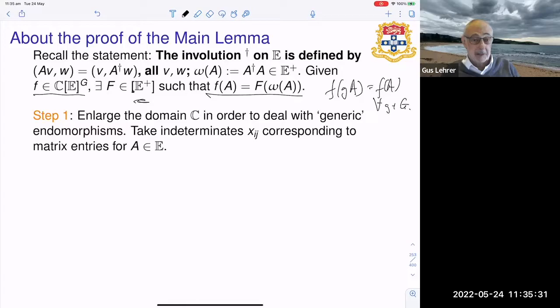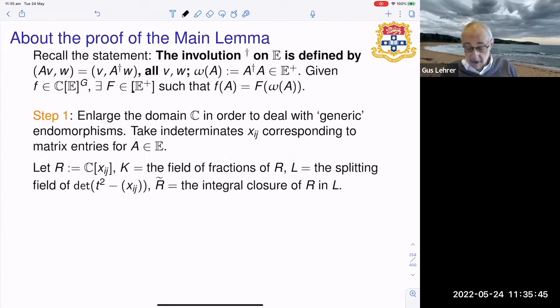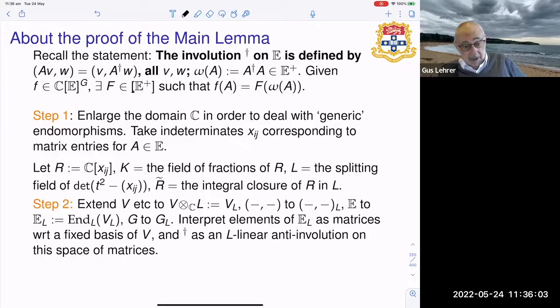So we take indeterminates x_ij corresponding to the matrix entries, and we take r to be the polynomial ring and k to be its field of fractions, and l to be a further extension of k which splits that polynomial.